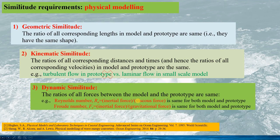The third similitude is dynamic similitude, meaning all the forces acting on the structure and the model are similar. This dynamic similitude can be guaranteed by ensuring the same non-dimensional numbers for the full scale and the scaled model — for instance, the Reynolds number, which is the ratio of inertial force over viscous force, or the Froude number, a ratio of inertial force over gravitational force.